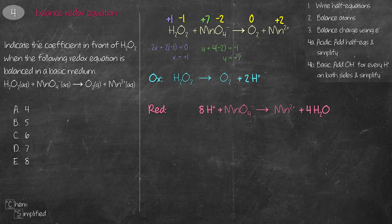Now we balance charge using electrons. For the oxidation half: the left side has charge 0, the right side has charge +2 from 2H+, so we add 2 electrons to get both sides to 0. For the reduction half: the left side has charge +7, the right side has charge +2, so we add 5 electrons to the left so both sides equal +2.